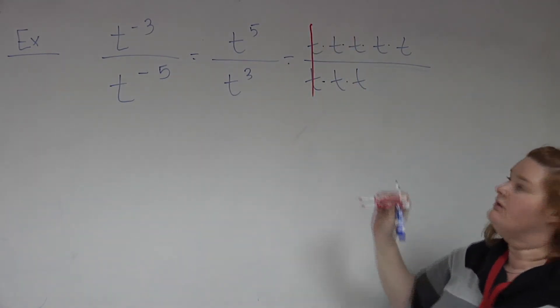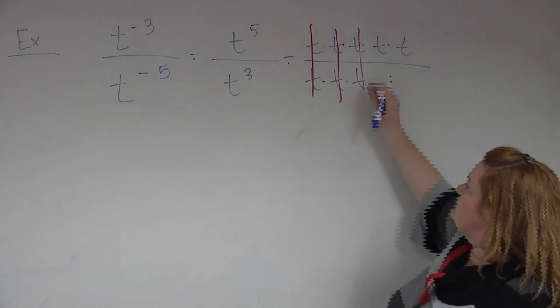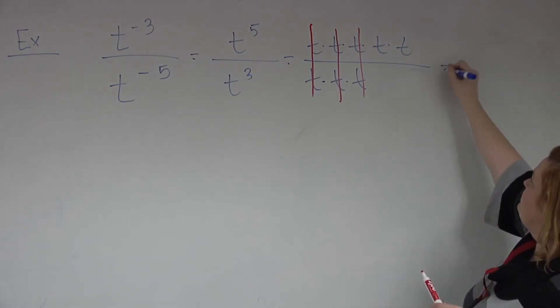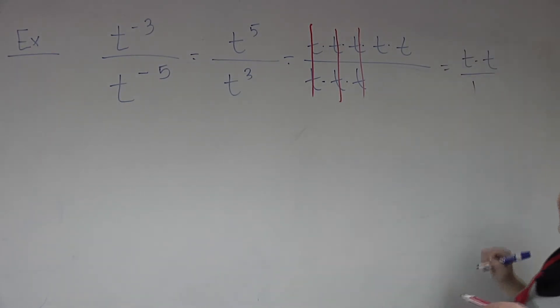1t cancels with 1t. Keep going as many times as you can. It leaves you with two t's on the top. That imaginary one on the bottom. Or a t squared as your final answer.